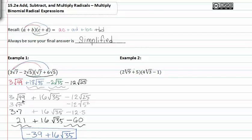In example two we do the same thing multiplying we get eight cubed root of three times nine which is twenty-seven. Outer we get negative one times two cubed root of nine, inner we get plus twenty cubed root of three, and lastly we get negative five. Now we can simplify.